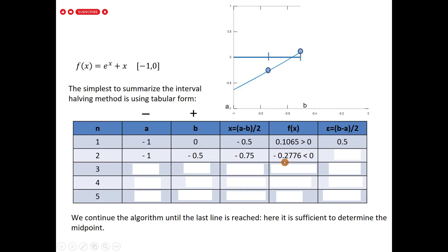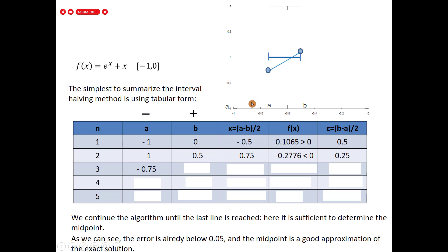At step 2, f(-0.75) is negative and equal to -0.2776. The error is 0.25, still greater than 0.05. Because the function is negative at the midpoint, we delete the left side and replace a with -0.75. Now a = -0.75 and b = -0.5. The new midpoint is -0.625. We evaluate f(-0.625).